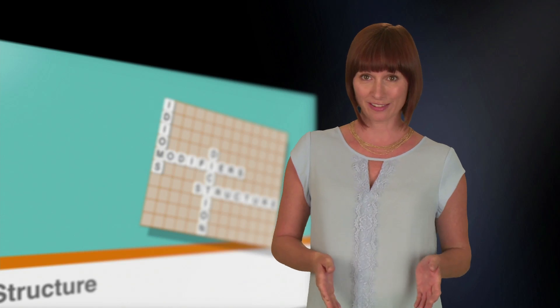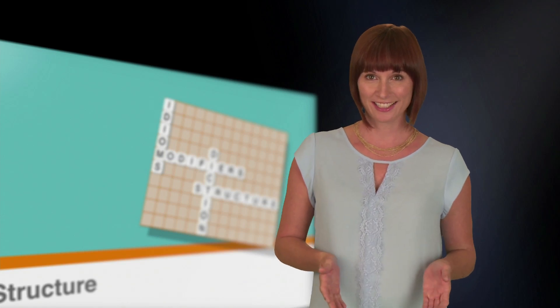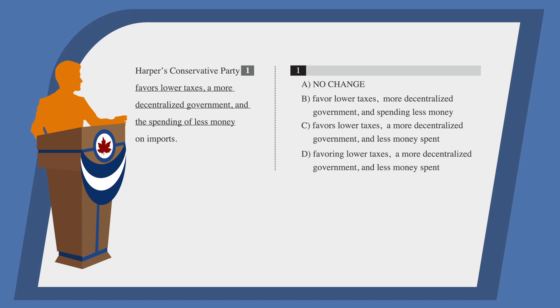See why we need parallel structure? Let's check out an example of a question we might see on the test. Harper's Conservative Party favors lower taxes, a more decentralized government, and the spending of less money on imports.